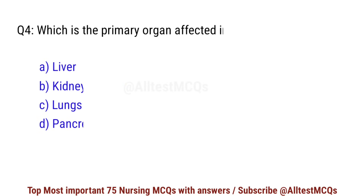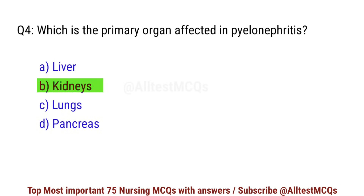Question number 4. Which is the primary organ affected in pyelonephritis? Correct option is B: Kidneys.